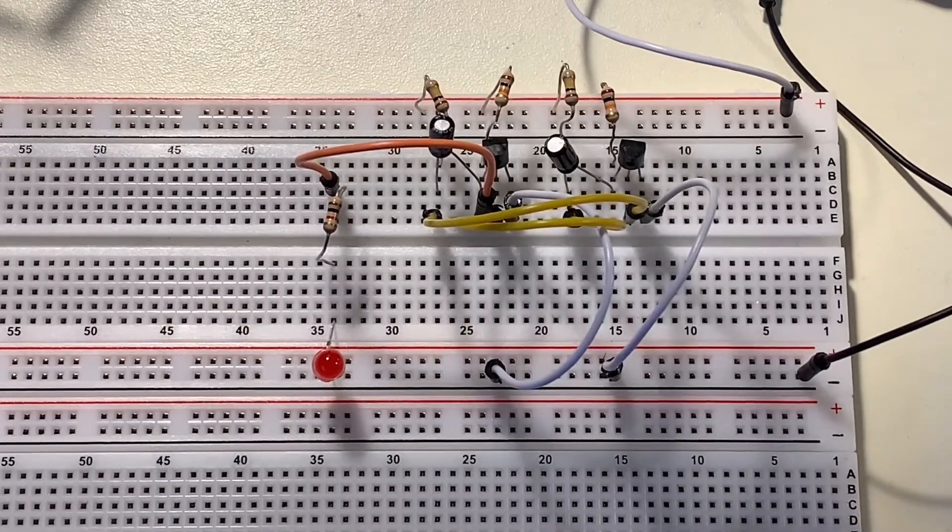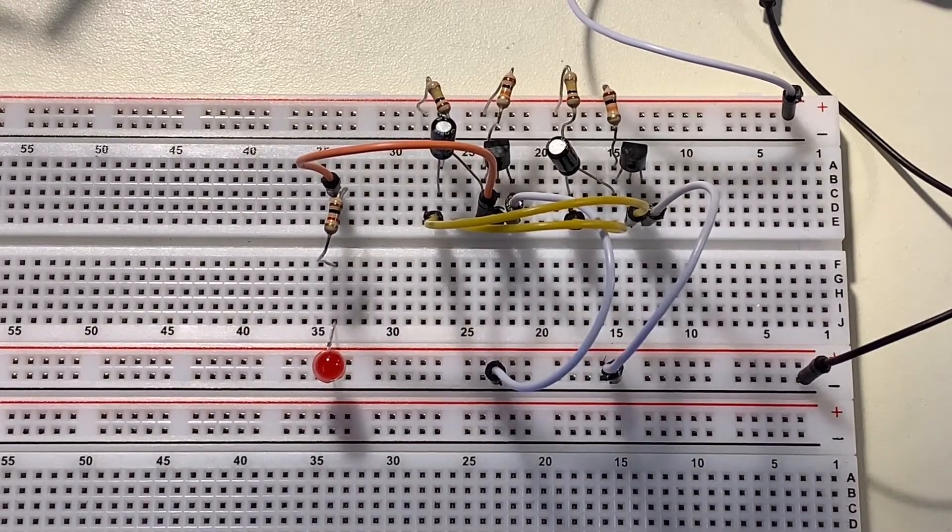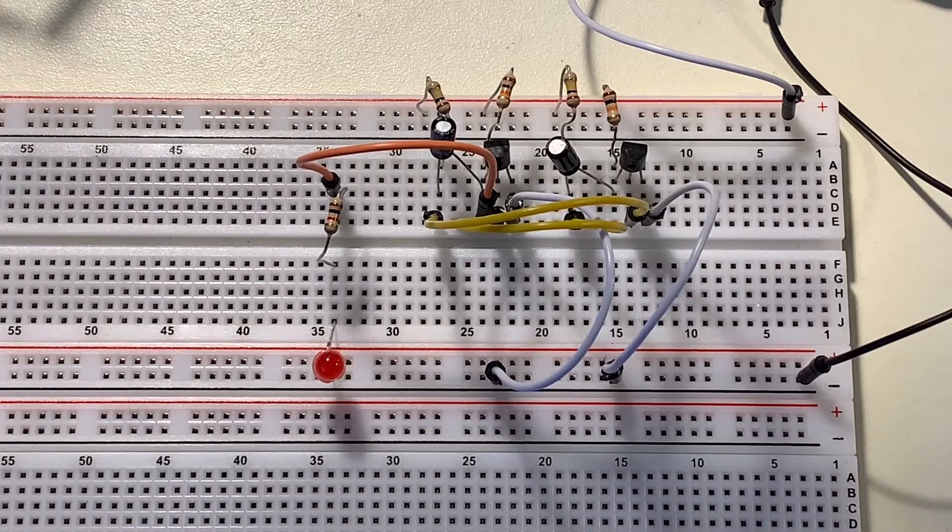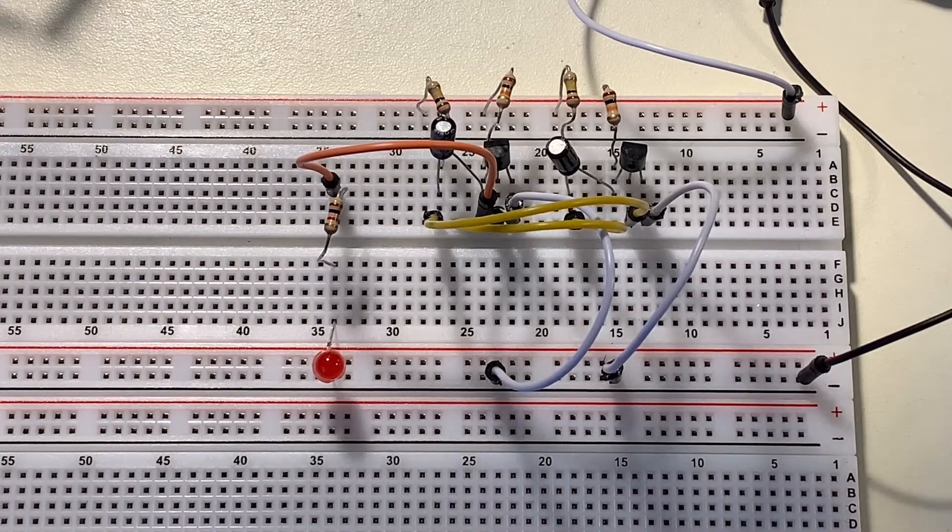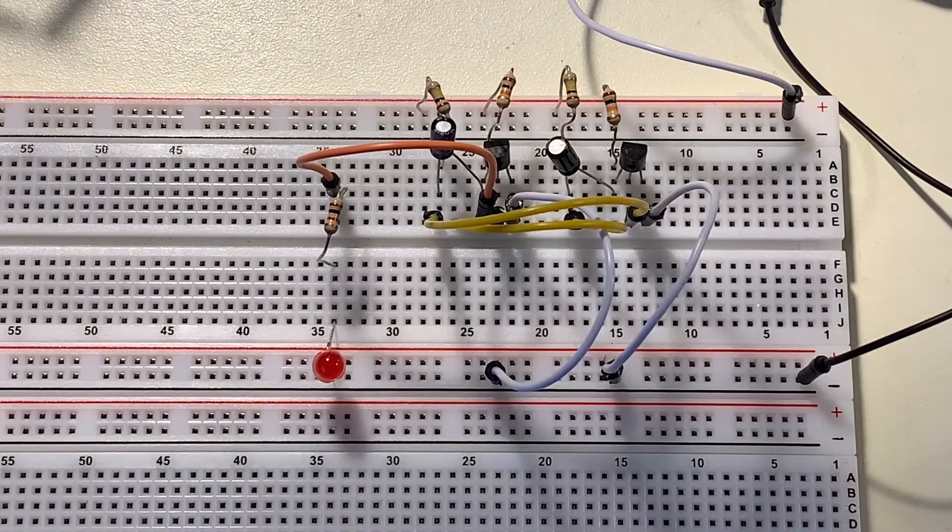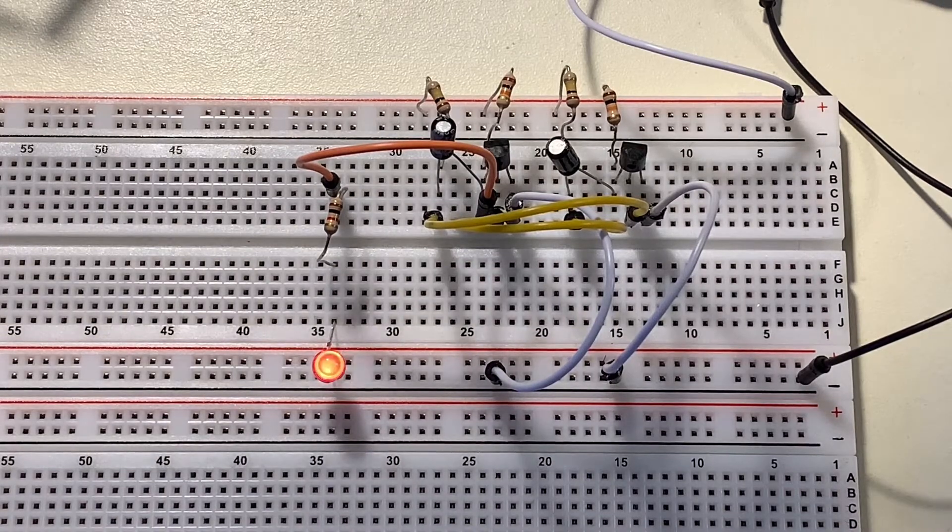In this video we'll be taking a look at one of the more foundational types of oscillators called an astable multivibrator. When I switch the power on here, you can see that the light starts flashing on and off.